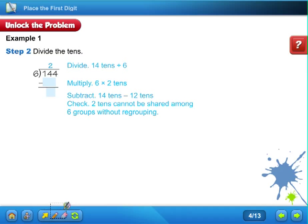So because I only have tens, I don't have a hundred to share, it has to start in the tens place. All right, so when I divide fourteen tens divided by six, if you multiply six times two tens, what do you get? Six times two is twelve.